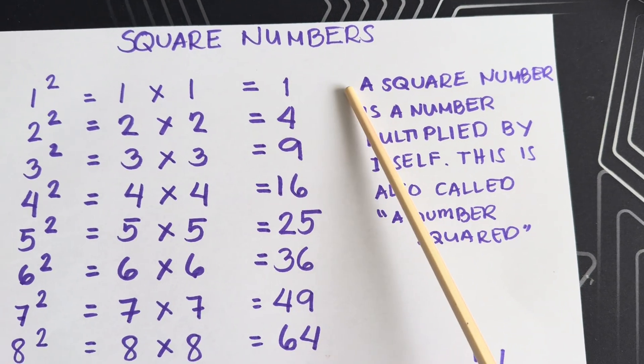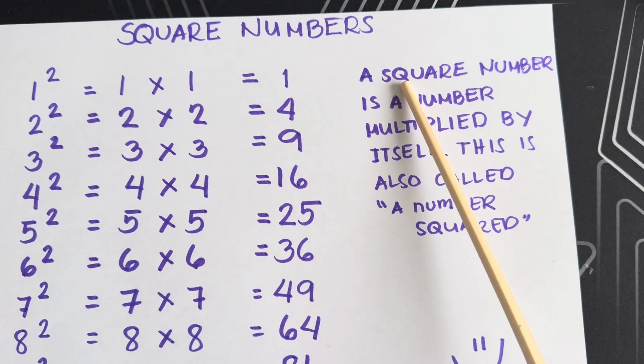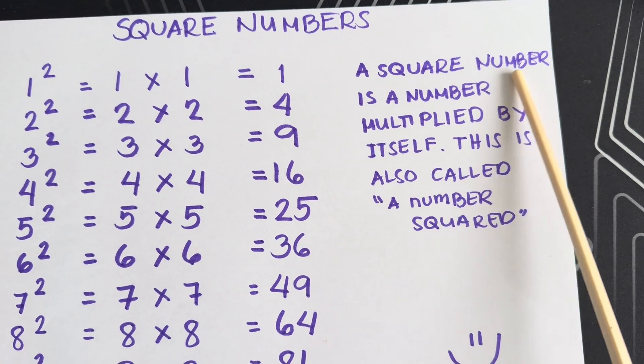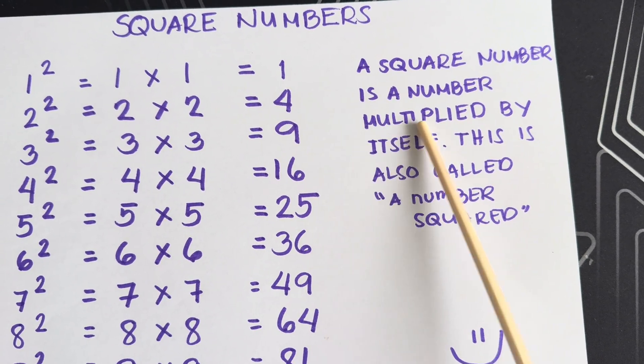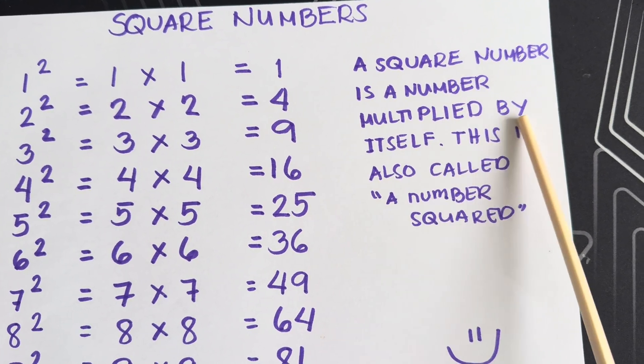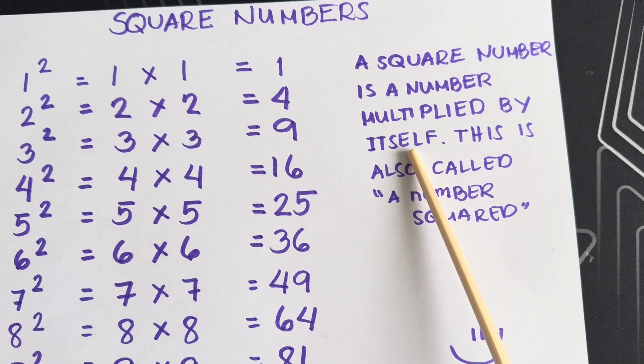Always remember, a square number is a number multiplied by itself. This is also called a number squared.